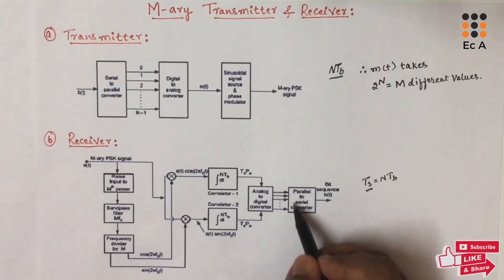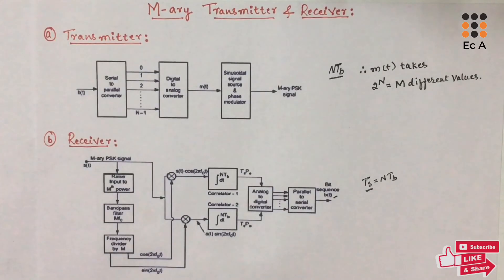The n-bit symbols are given to the parallel to serial converter. The parallel to serial converter generates the bit sequence B(t). So this is the operation of receiver. This is about the transmitter and receiver of M-ary PSK.